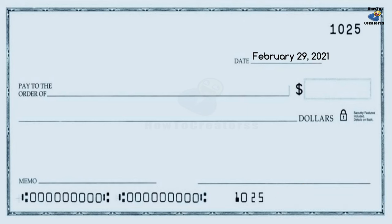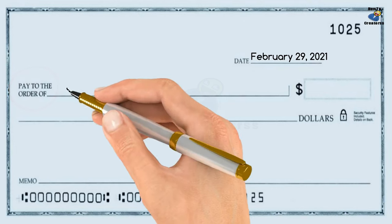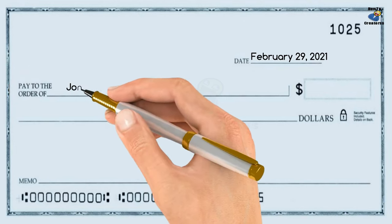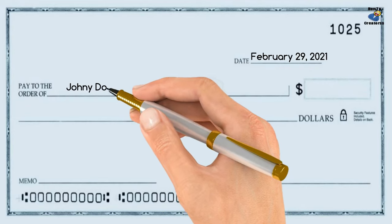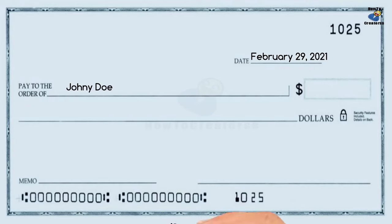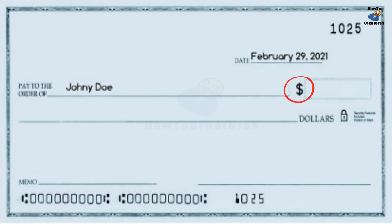Pay to the order of: fill in the payee information — that is, the business name or first and last names of the person the money goes to.